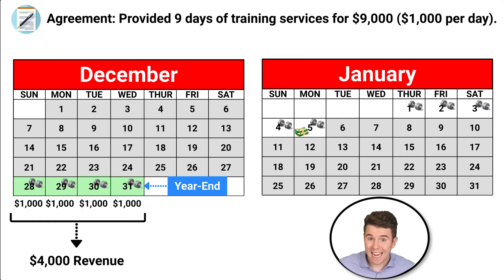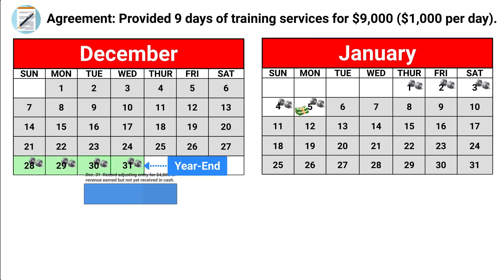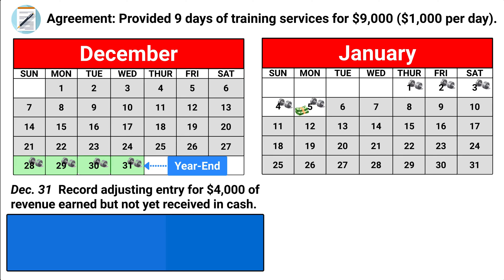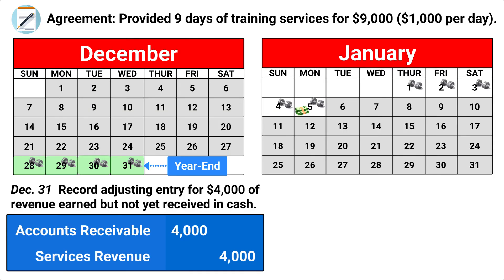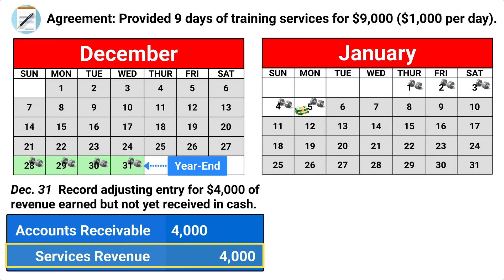Therefore, we need an adjusting entry to record the revenue we have accrued on the contract, even though we have not yet been paid. To record this accrued revenue, we debit accounts receivable for $4,000 and credit services revenue for $4,000. We debit accounts receivable because we are now owed that amount for the work we have performed, and credit services revenue to recognize the revenue that has been earned.